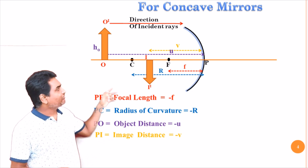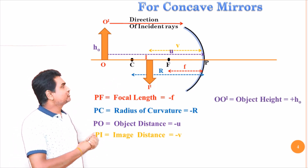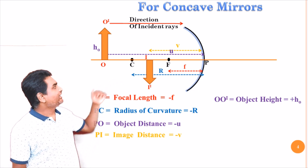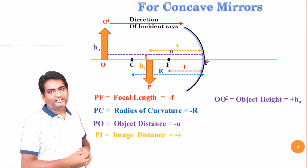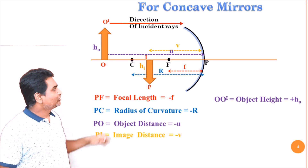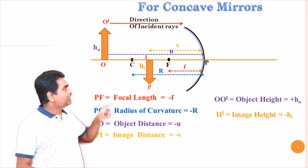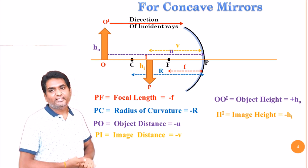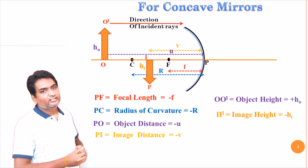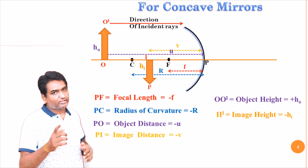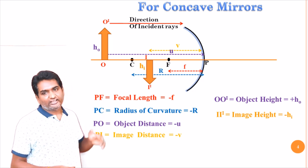Now coming to the heights: let us say the height of the object O O-dash is H-naught. It is above the principal axis, so this height is treated as positive. Coming to the image height I I-dash, let us say its height is H-i. The image is found below the principal axis, so the image height in this case is minus H-i. Heights above the principal axis are positive; heights below the principal axis are negative.